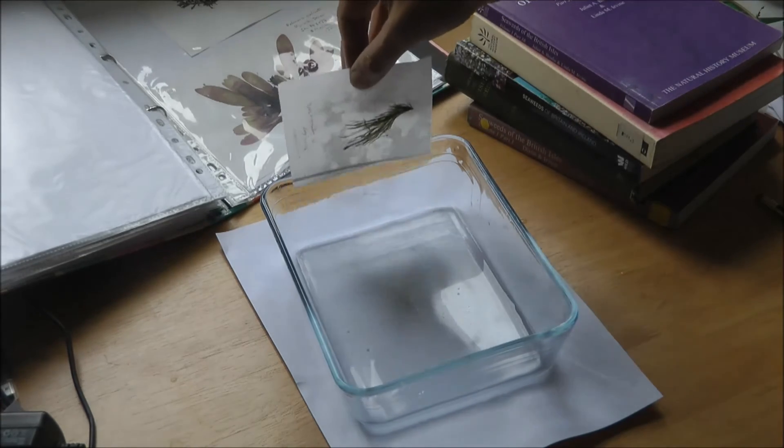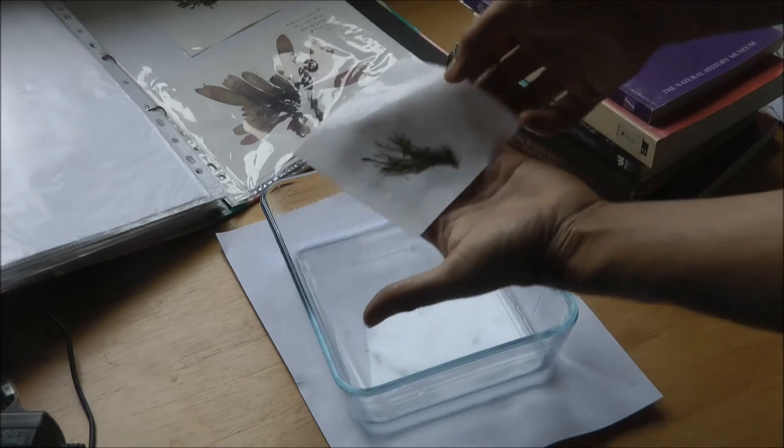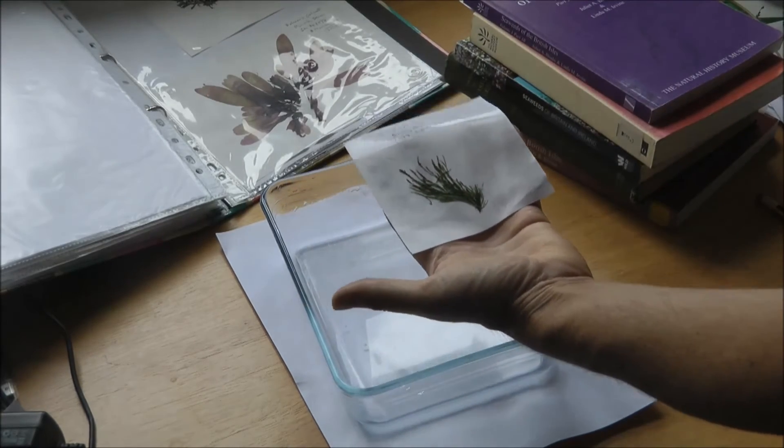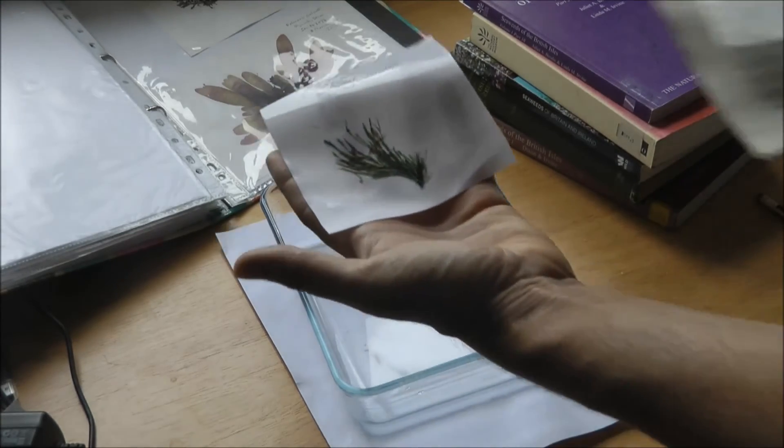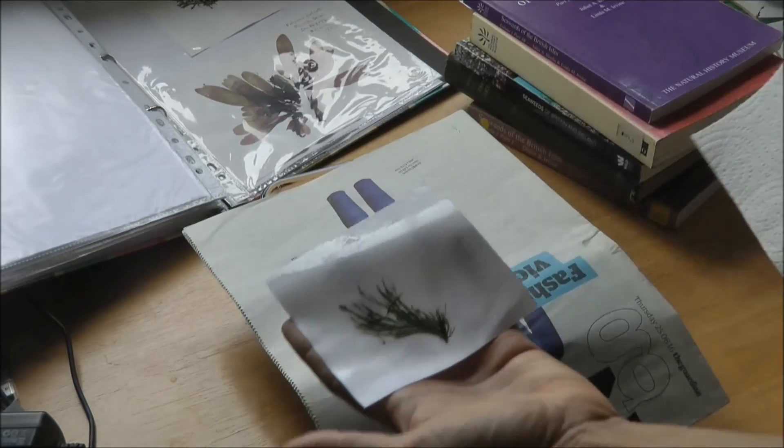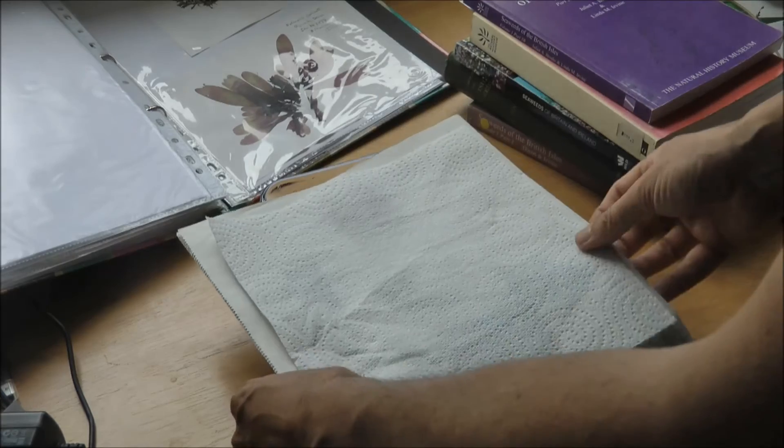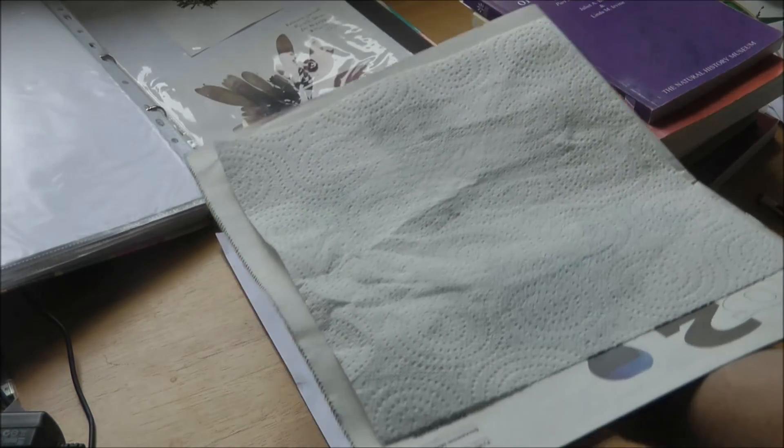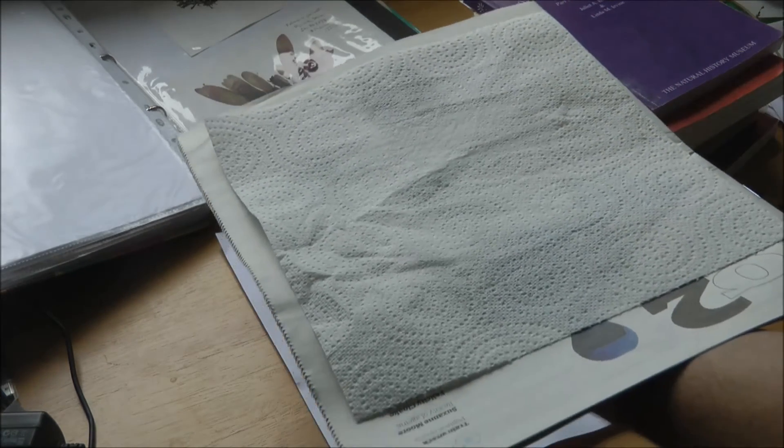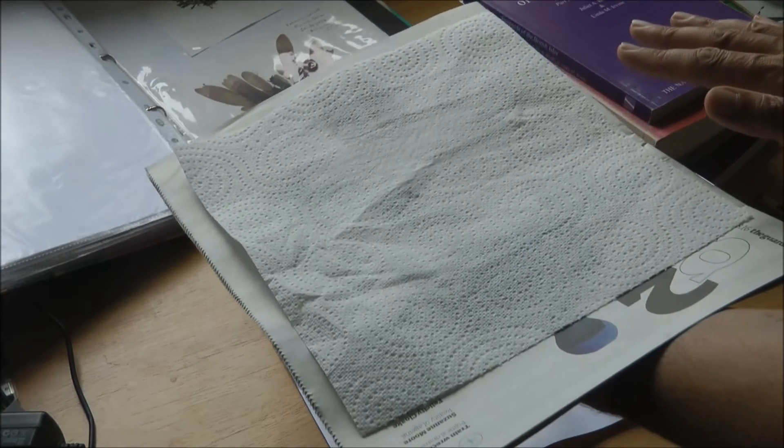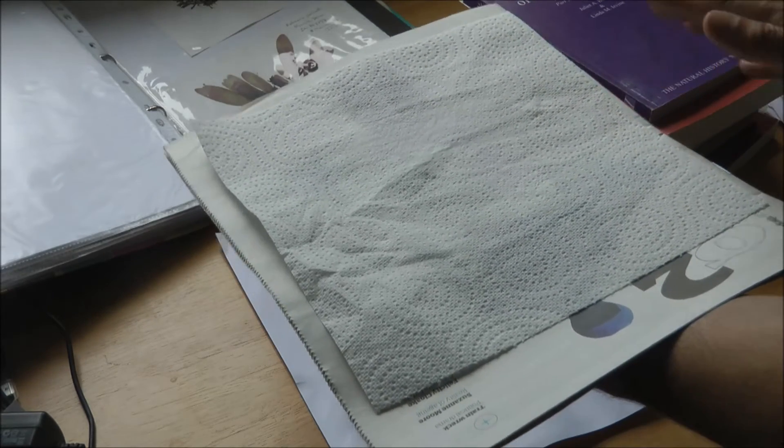There you go. And now what we need: some newspaper, some kitchen roll. And then you can just add some more newspaper on top and stick it under a load of heavy books and press it.